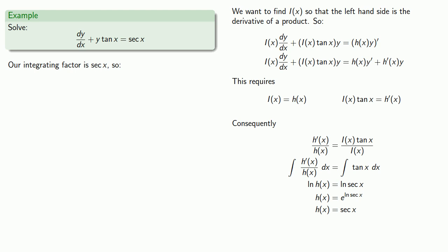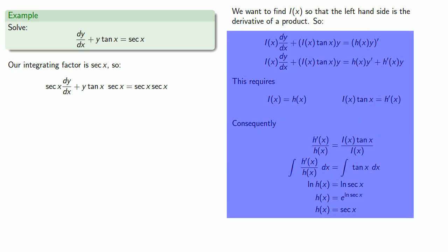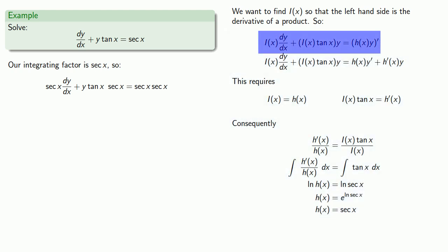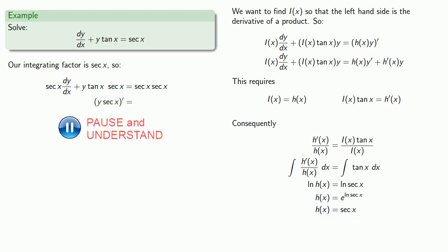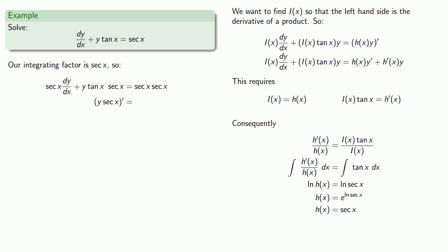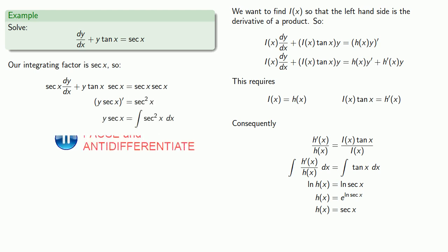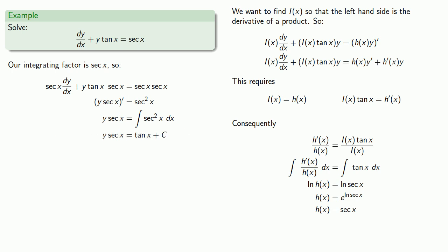We multiply every term by sec(x), and the left-hand side is the derivative of h(x)·y — that is, the derivative of sec(x)·y. Meanwhile the right-hand side is just sec²(x). We antidifferentiate both sides and finally solve for y.